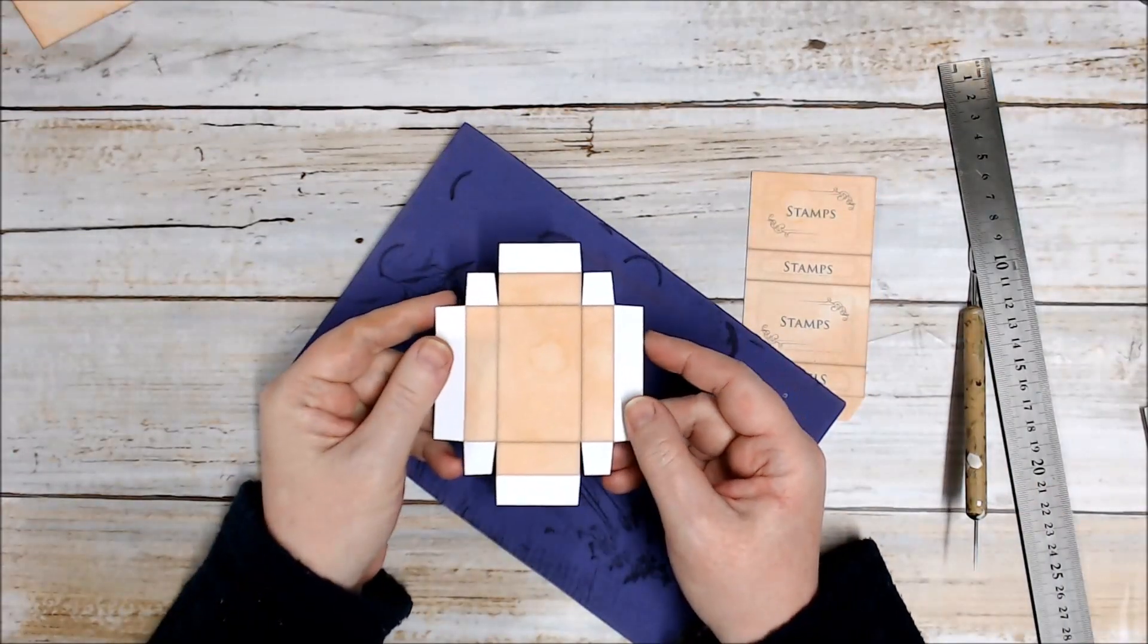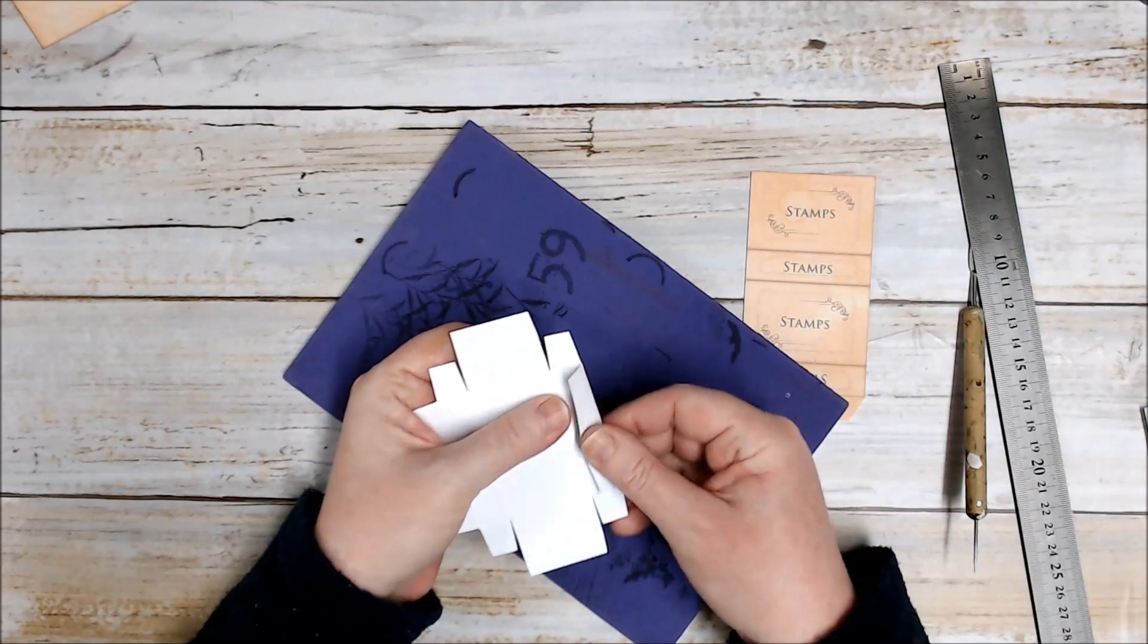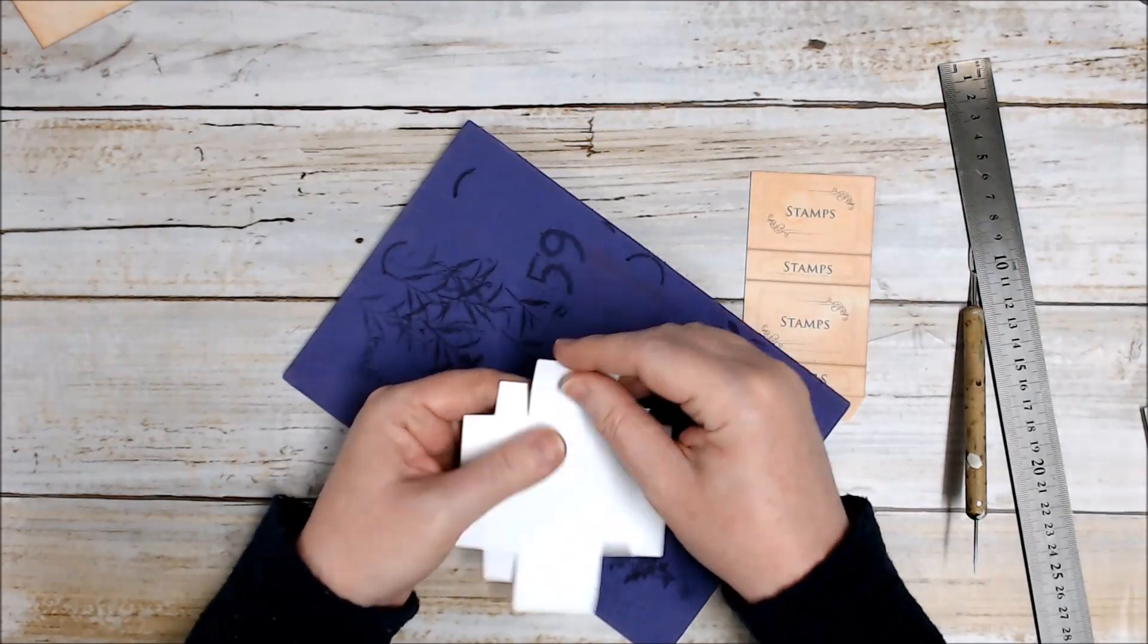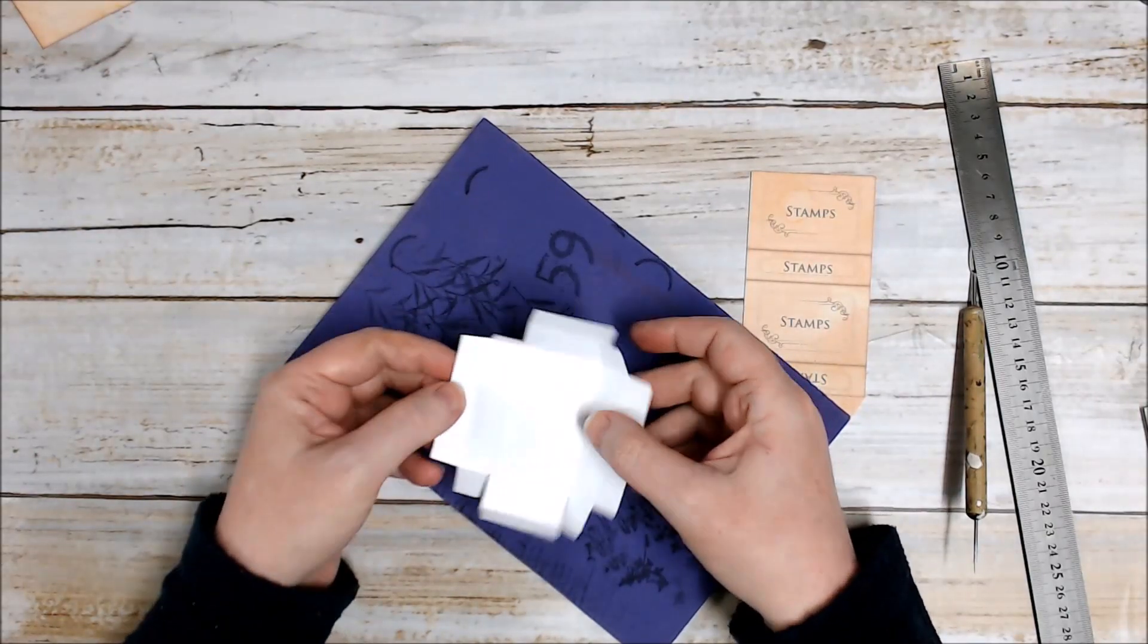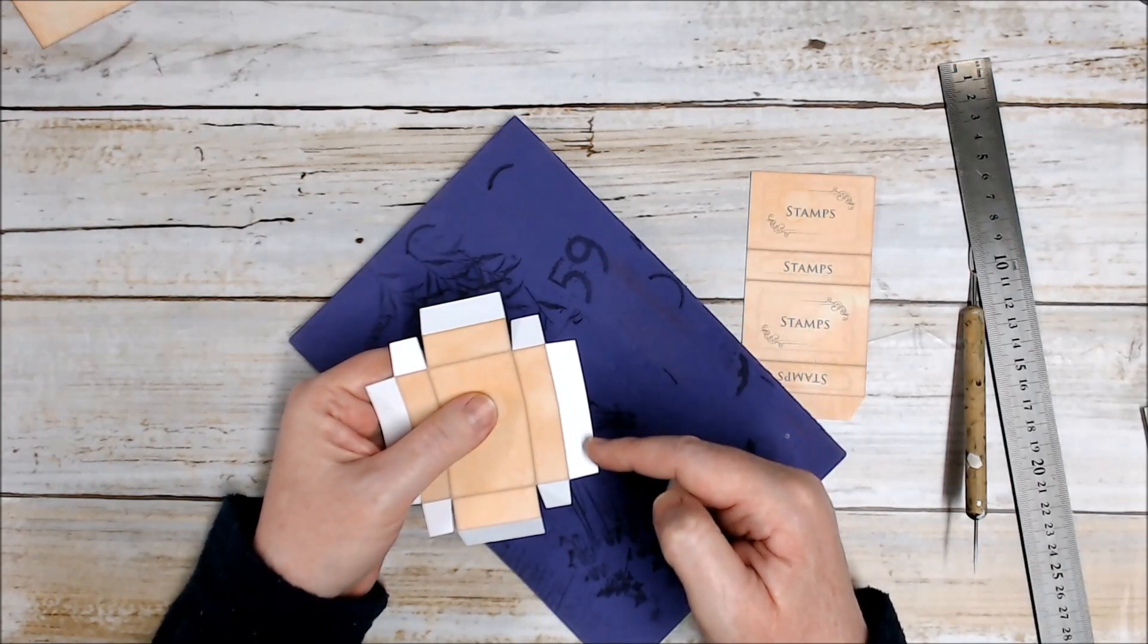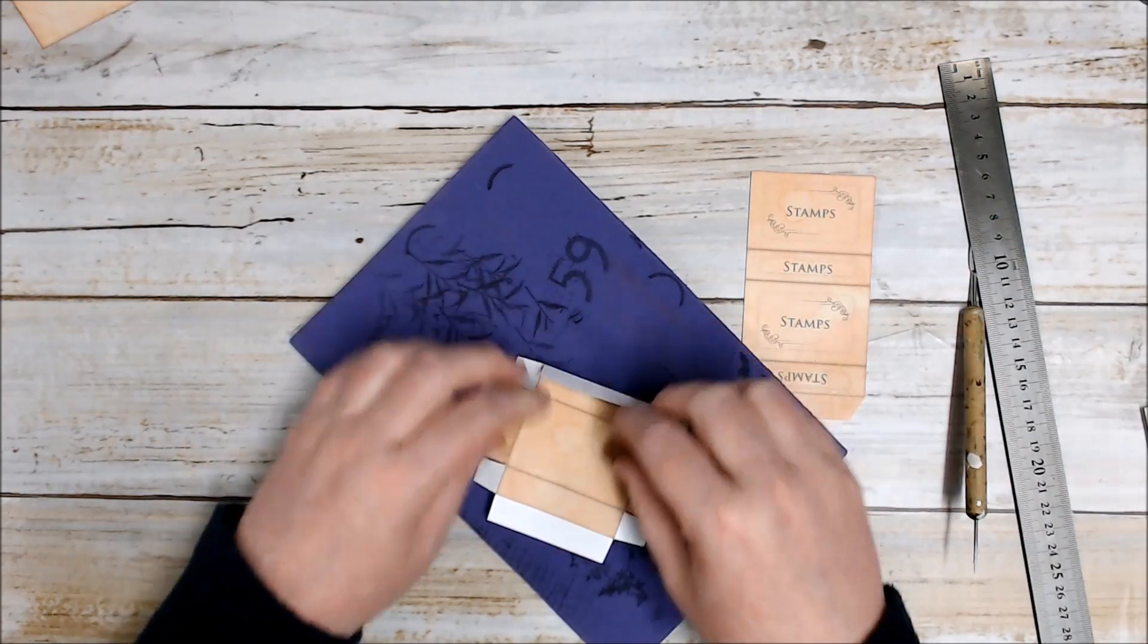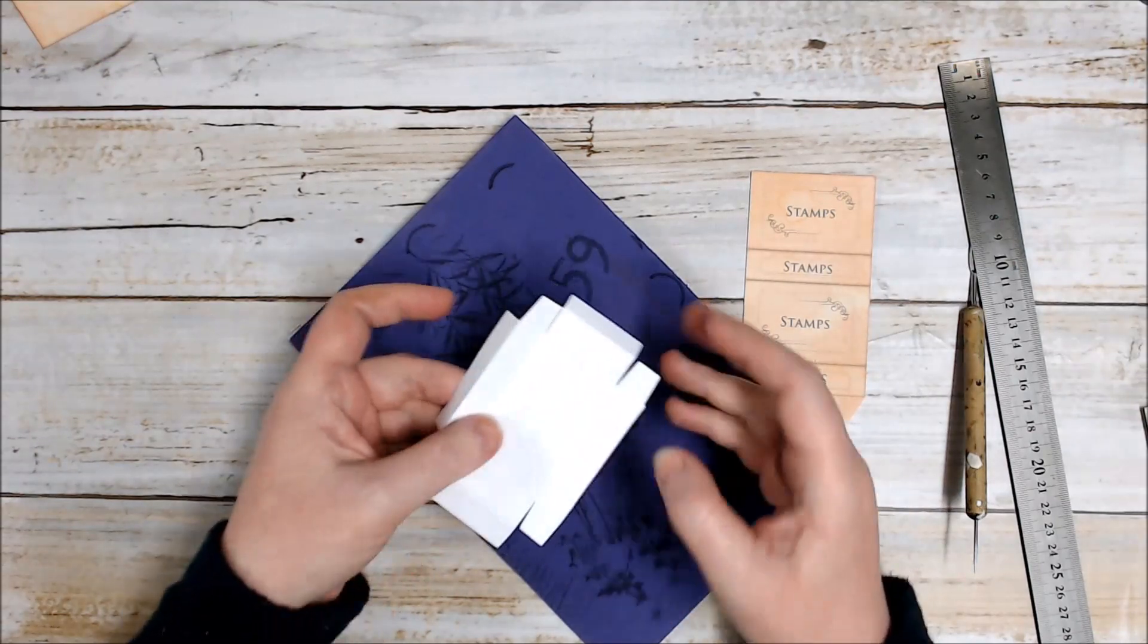Once you've scored everything turn the matchbox over and fold everything inwards. Then on the two longest white flaps you want to fold those back out again just for now. Turn your matchbox over.